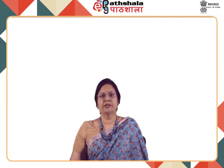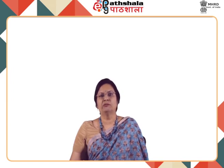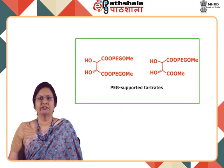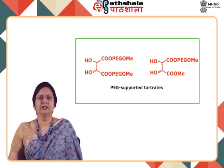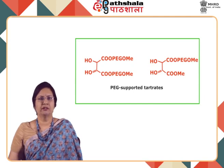Either the titanium catalyst was made heterogeneous or the chiral ligands were mounted on a polymer support such as polystyrene. However, polymer-based supported catalysts usually swelled in the reaction mixture, aggravating workup procedures. PEG-mounted tartrates were also used, but although they simplified the purification procedure and recyclability, the enantiomeric excess was much lower compared to the conventional procedure and decreased further on recycling. Shown here are the structures for the PEG-supported tartrates.